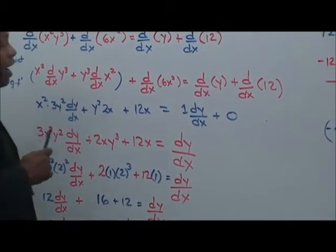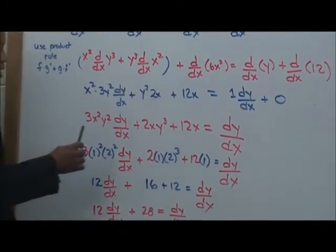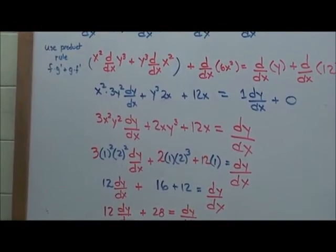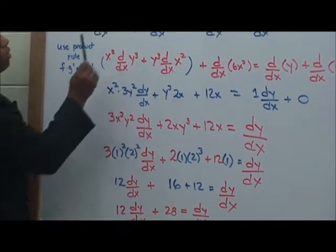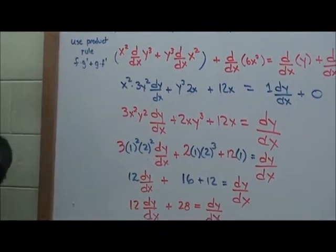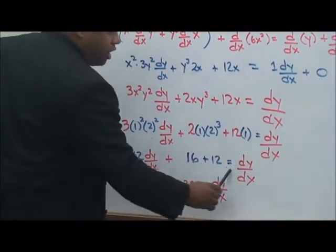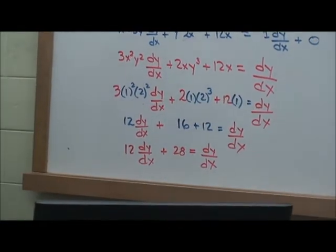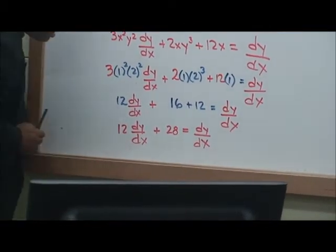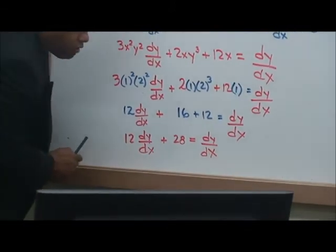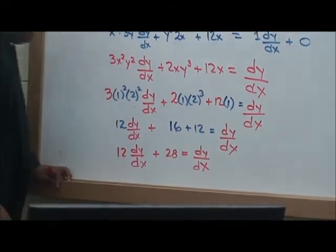The derivative of y is 1 dy/dx, and the derivative of a constant is 0. So putting everything together and simplifying, we're going to substitute the values x equals 1 and y equals 2 into the equation. When we do that, we come up with 12 dy over dx plus 16 plus 12 equals dy over dx. So we still have to solve for dy over dx. We have 12 dy/dx plus 28 equals dy over dx.